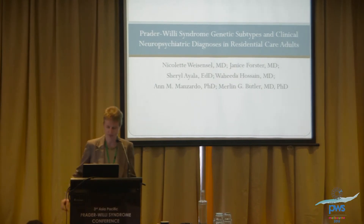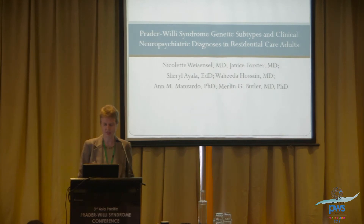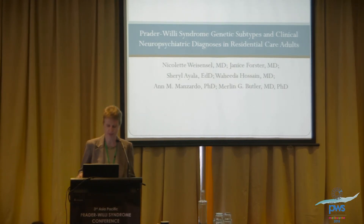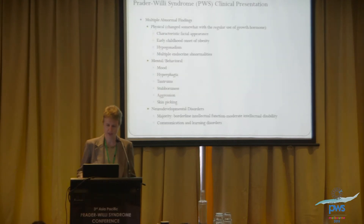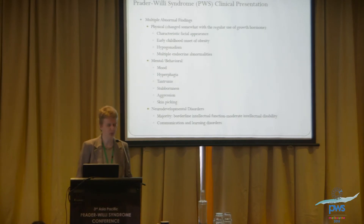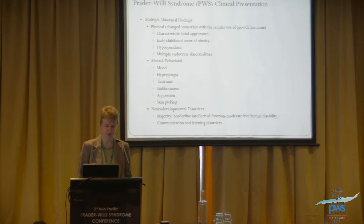I'm going to talk about Prader-Willi syndrome, looking at the genetic subtypes and clinical neuropsychiatric diagnoses in a group of residential care adults. Several individuals were involved in this study. As we have heard earlier, individuals with Prader-Willi syndrome have multiple abnormal findings — physical, mental, behavioral, and neurodevelopmental.